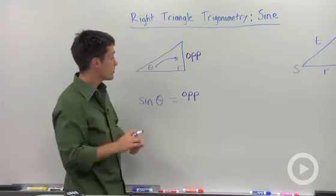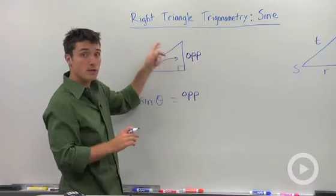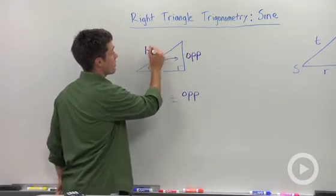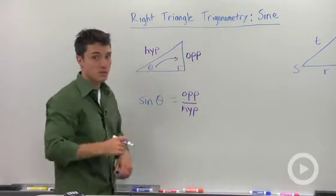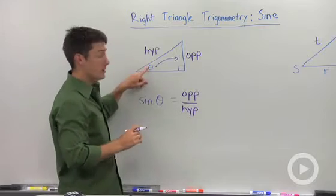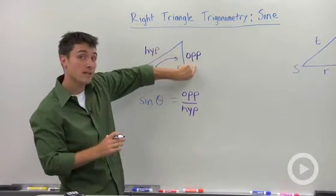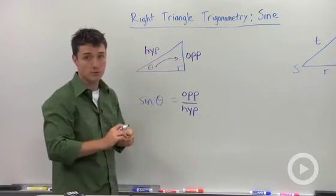Now, sine is the ratio of this opposite side to the hypotenuse, which I'm going to abbreviate HYP. So sine is the ratio of an angle, the side opposite to the hypotenuse.